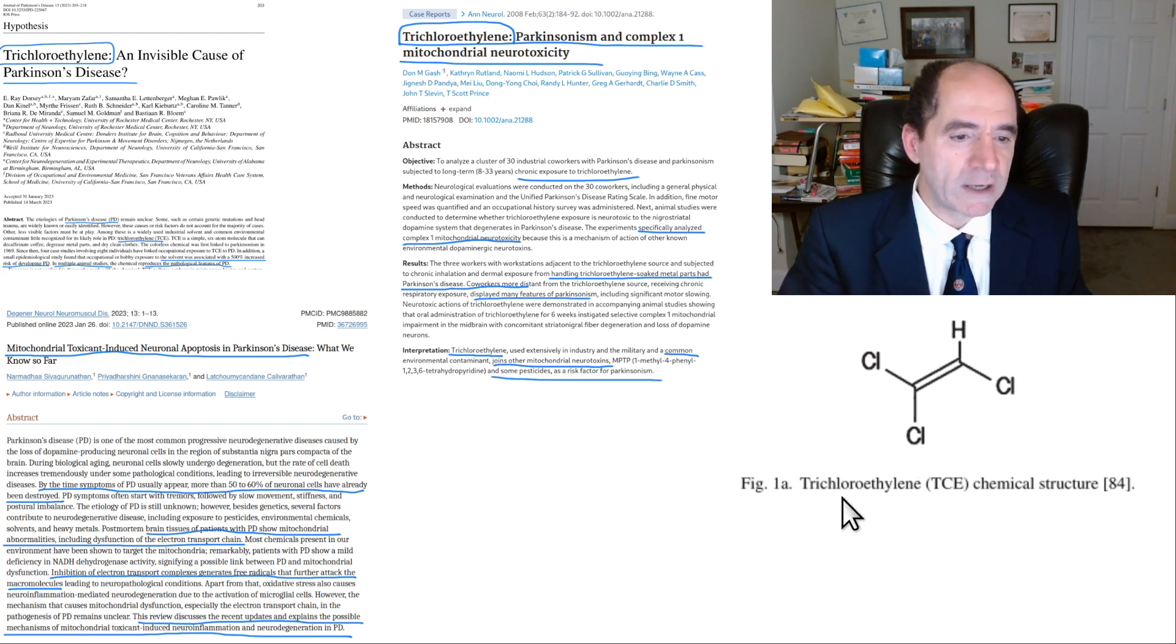Trichloroethylene and mitochondrial toxicity, inhibition of complex one. Here's the structure of trichloroethylene. Trichloroethylene means three chlorines: one, two, three. Ethylene means a double bond between two carbons. So here's a carbon here, here's a carbon here, there's a double bond. So that's trichloroethylene.